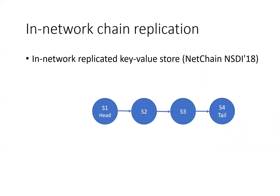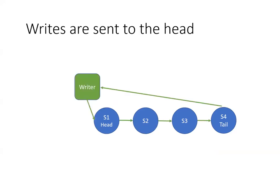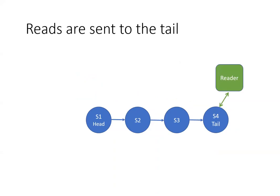NetChain introduced a replicated in-network key-value store that is based on chain replication. In this model, we linearly order the switches to form a chain, with the first switch called the head of the chain and the last switch called the tail of the chain. Writes are sent to the head of the chain and travel down the chain to the tail, which sends an acknowledgement to the writer, while reads are executed at the tail — so chain replication provides strong consistency.